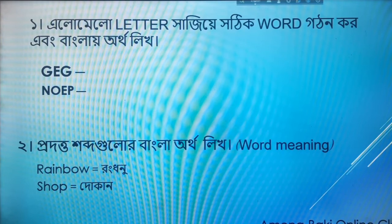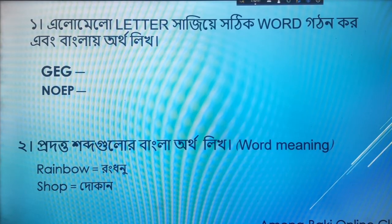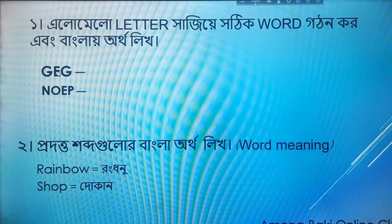In the assignment, we will see that some words have their letters jumbled — that is, the letters of each word are arranged randomly in an ello-mello (mixed-up) way. We have to rearrange those jumbled letters to form the correct word, and also write the Bengali meaning. Note that some letters here are capital letters.